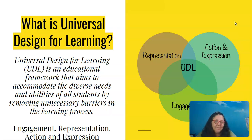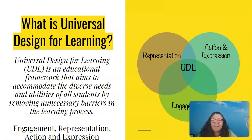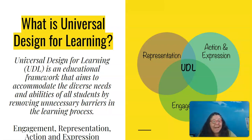So what is universal design for learning? It is a framework that says not everybody's the same. Because people have diverse needs and diverse abilities, you can remove the barriers to learning by providing people with a way to learn that is conducive to their own personal styles, abilities and diversities. And this can be categorized and done in three ways: representation, engagement, and action and expression.